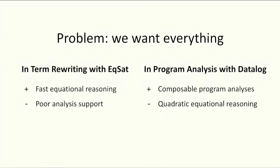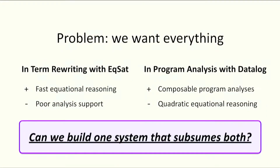The problem we study is that people do equational program reasoning with equality saturation because it's fast. But current EQSat frameworks have only limited support for semantic analysis, which causes real-world headaches. On the other hand, people do rich and composable program analysis in datalog, but equational reasoning in datalog is asymptotically slow. A natural question arises: can we build one system that subsumes both equality saturation and datalog?